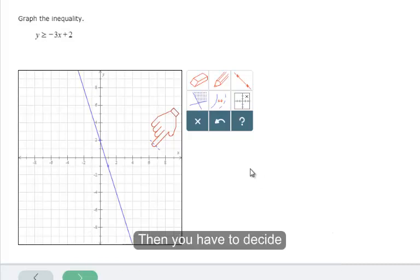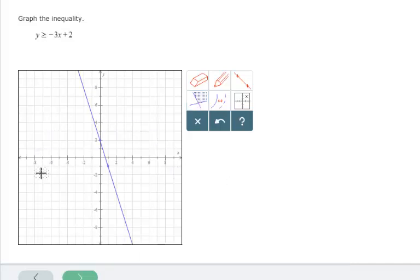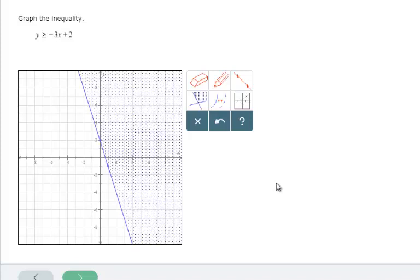Then you have to decide which side to shade. This is your shade tool. Whichever side I click on will become shaded. And then we say submit.